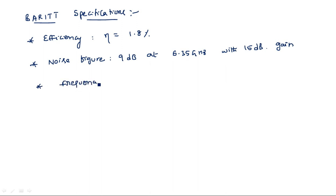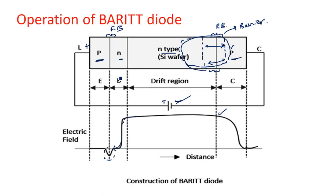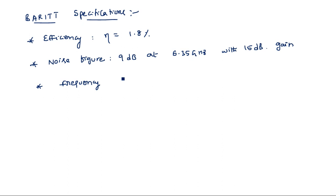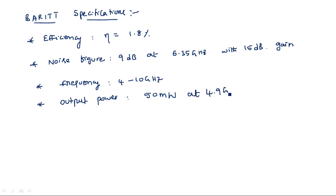The frequency of operation of this BARITT diode, as mentioned at the beginning, is 4 to 10 GHz. The output power is 50 milliwatts at 4.9 GHz. The output power varies with respect to the frequency of operation, and specifically 50 milliwatts is given at 4.9 GHz. This completes the operation, construction, and specifications of the BARITT diode. Thank you.